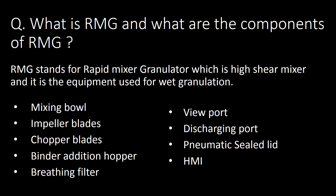What is RMG and what are its components? RMG stands for Rapid Mixer Granulator, which is a high-shear mixer used for wet granulation. The major components of RMG are: mixing bowl, impeller blades, chopper blades, binder addition hopper, breathing filter, viewport, discharging port, pneumatic shield, lid, and HMI.